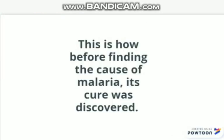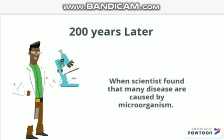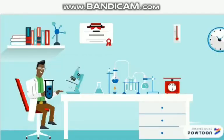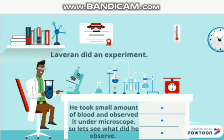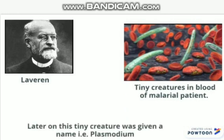This is how, before finding the cause of malaria, its cure was discovered. Then, 200 years later, scientists found that many diseases are caused by microorganisms — tiny creatures. Laveran was a scientist who did an experiment. He took a small amount of blood and observed it under a microscope. When Laveran observed the blood of a malarial patient, he saw a few tiny creatures in the blood. Later on, this tiny creature was given the name Plasmodium.